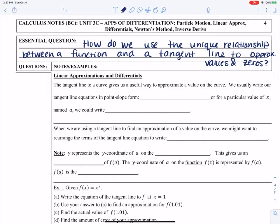So today we're going to explore how we can use the relationship between a function and a tangent line to approximate values and zeros. So to start off with, let's start with this idea of a linear approximation.